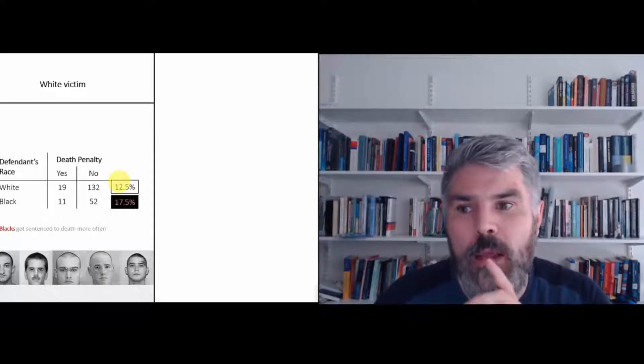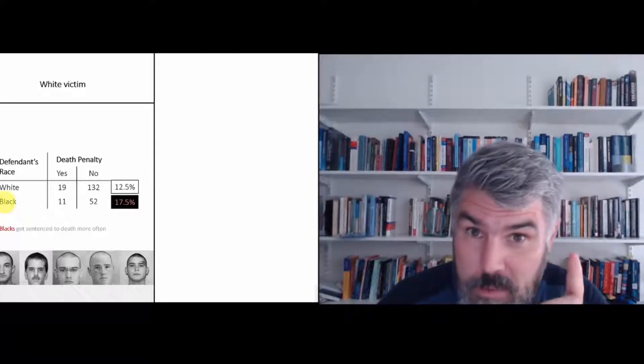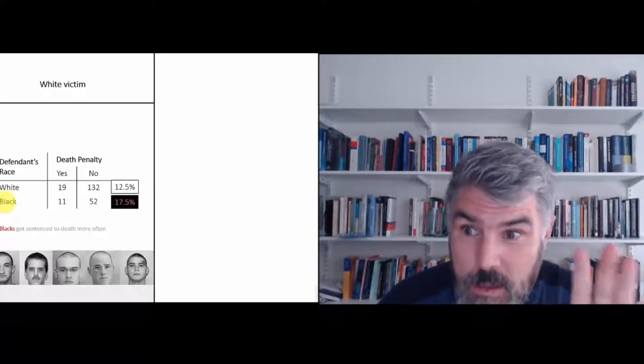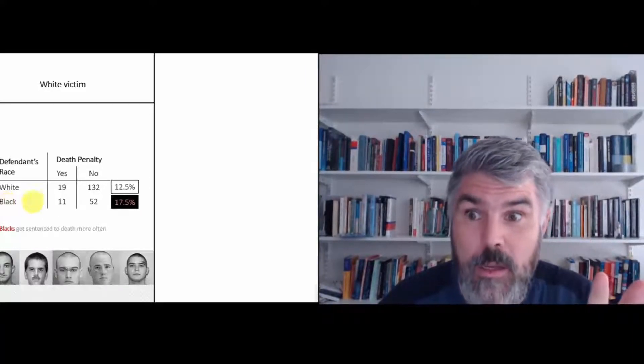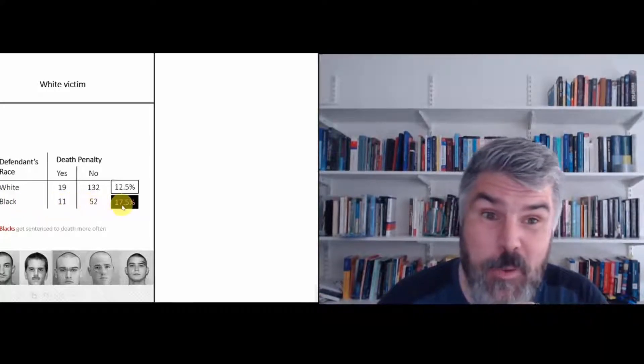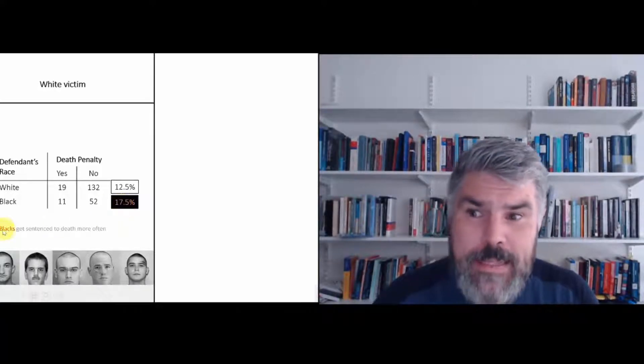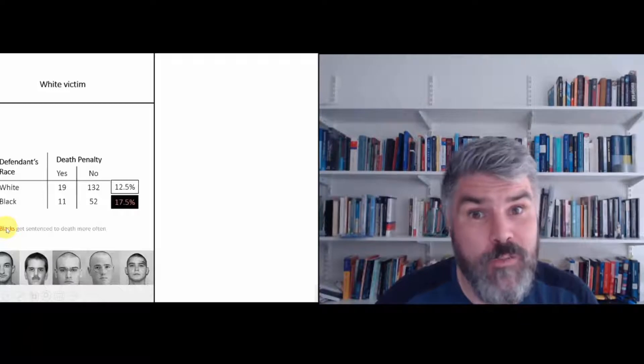But when we now look at the percentage for black offenders who killed a white victim, we have 11 divided by 52 plus 11, which is 17.5% of the blacks get sentenced to death. So now it seems that blacks get sentenced to death more often than whites.